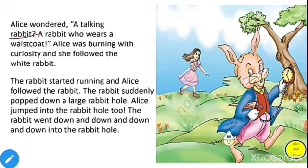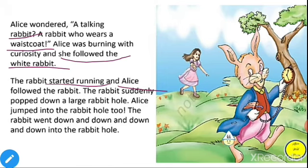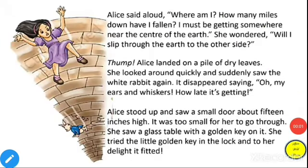Alice wondered about the talking rabbit — a rabbit who wears a waistcoat. Alice was burning with curiosity and she followed the white rabbit. The rabbit started running and Alice started running too. That rabbit suddenly popped down a large rabbit hole and Alice jumped in too. The rabbit went down and down, deep into the rabbit hole. Alice said loudly, 'Where am I? How many miles down have I fallen? I must be getting somewhere near the center of the earth.' She wondered, 'Will I slip through the earth to the other side?'